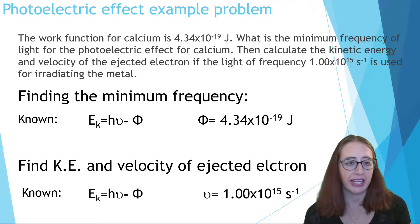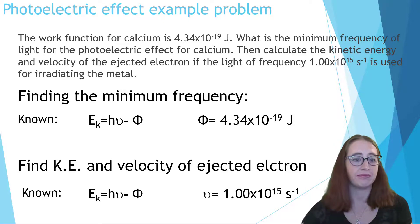So let's quickly go back to our plan and review what we did. In order to do the first part where we found the minimum frequency of light used for the photoelectric effect in calcium, we used our equation and the concept that at the minimum frequency the ejected electron will have an energy of zero to solve for the minimum frequency.